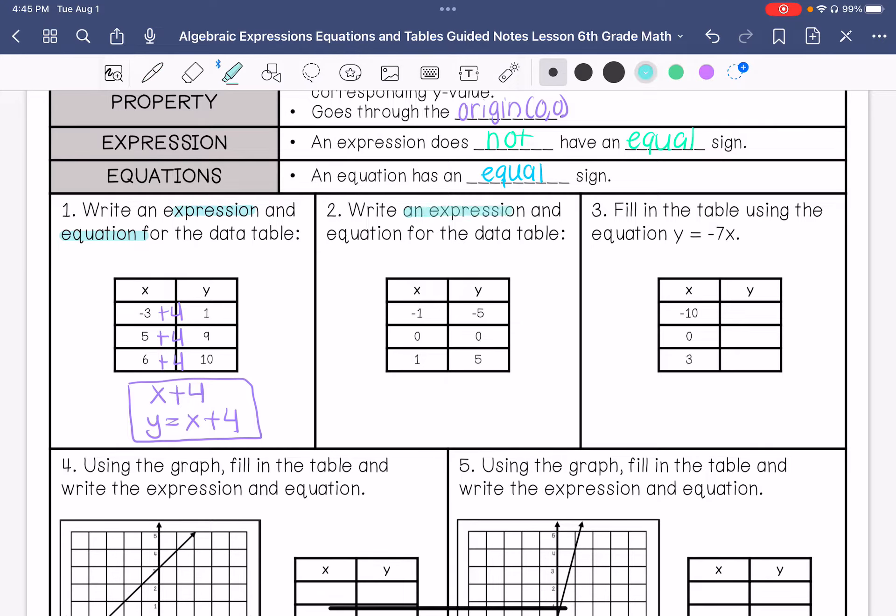Write an expression and equation for the data table. We need to look at how do we get from negative 1 to negative 5, 0 to 0, and 1 to 5. I could add 4 as negative 1 plus 4, negative 5. No, it's negative 3, so that's not going to work. Let's try multiplication. Times 5, times 5, times 5. That looks like that's going to work. So my expression is 5x. My equation is y equals 5 times x.